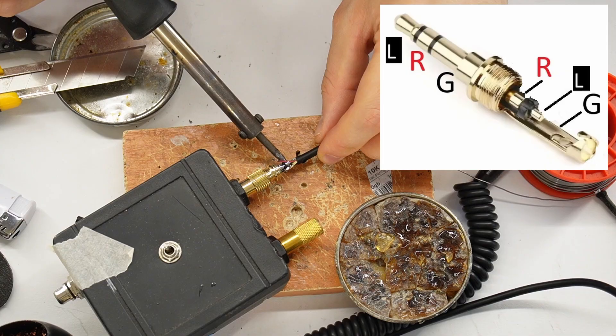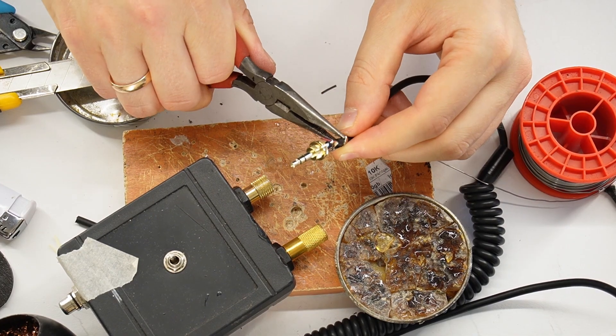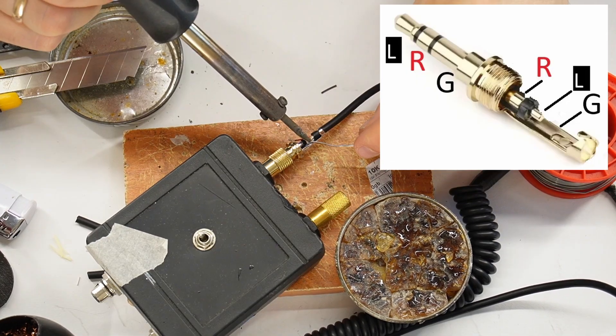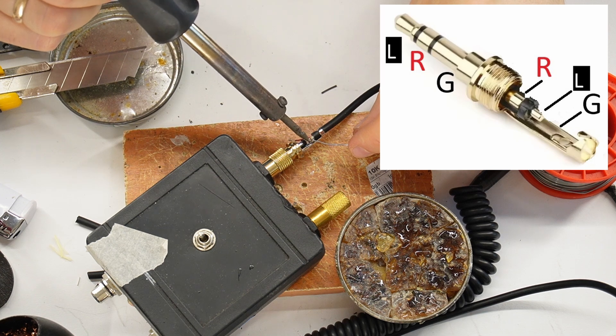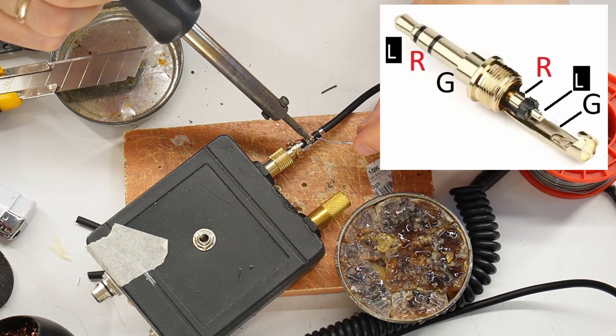Start by soldering the black ground wire and fix it in place using the jack's metal clamps. Keep in mind, the wire's color layout can be different on your headphones, so always double check it.